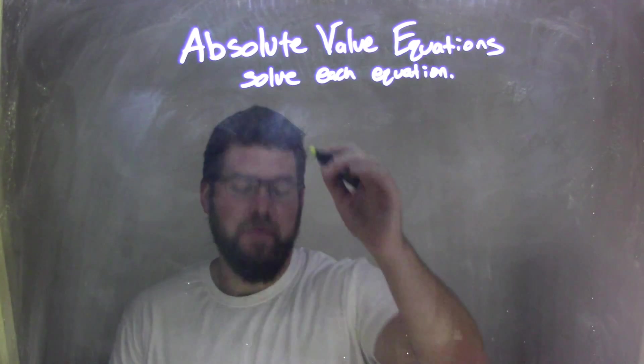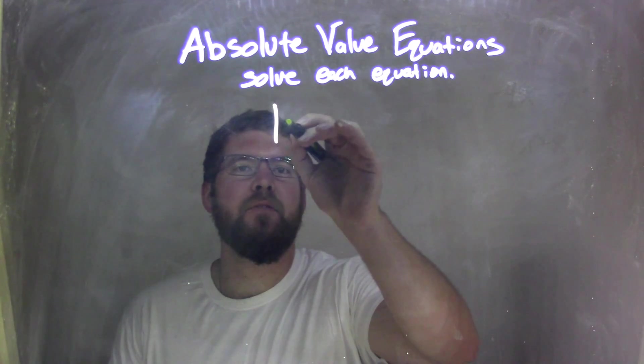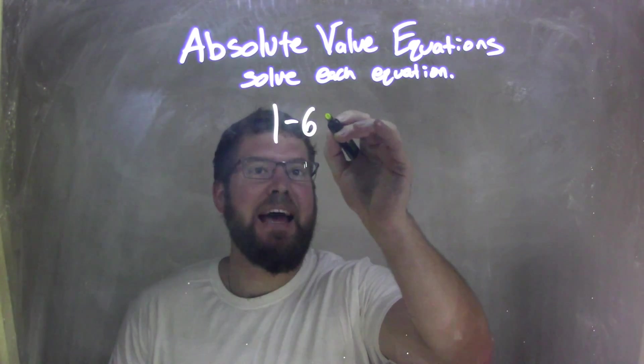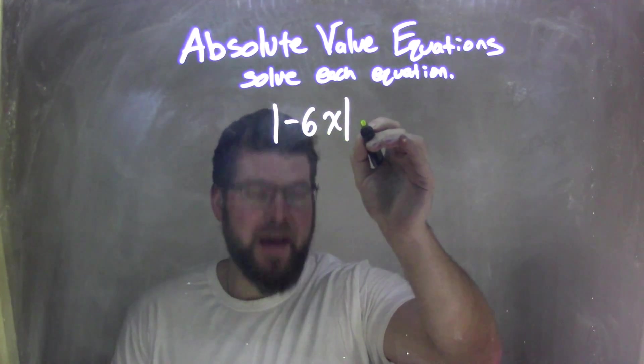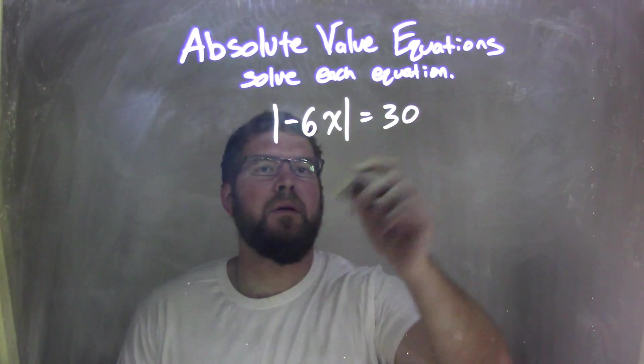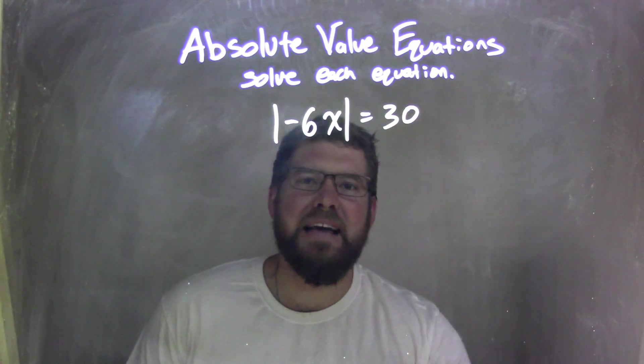So if I was given this absolute value equation: absolute value of negative 6x equals 30. Alright, our absolute value is isolated here. Fantastic.